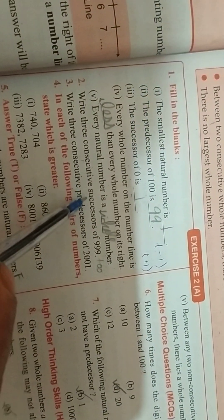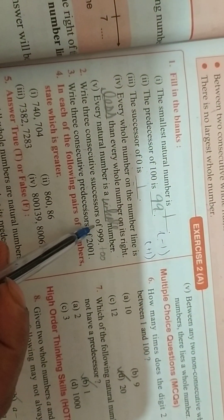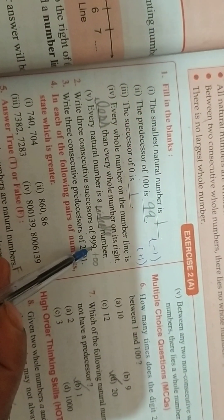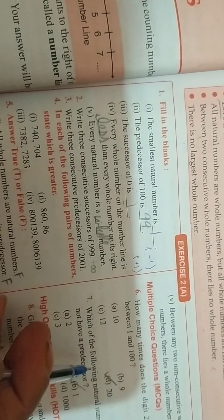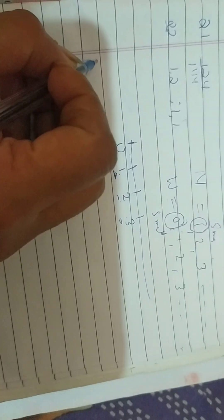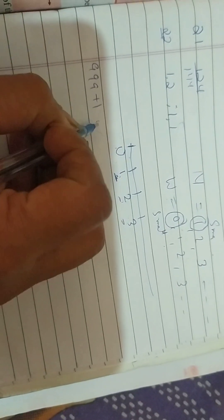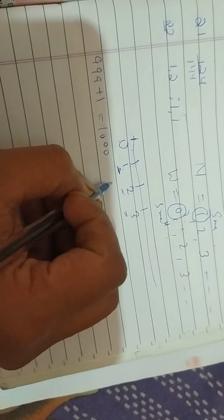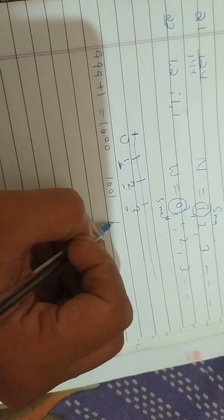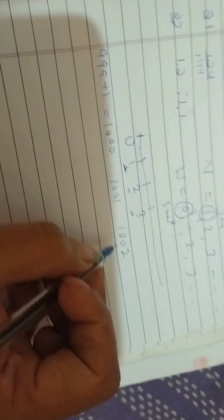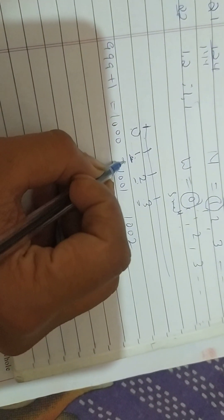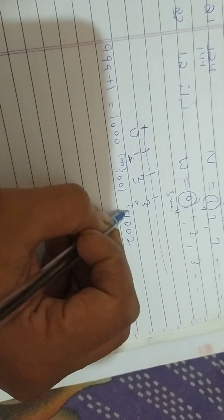Now, write 3 consecutive successors of 90,999. So what you will do? You will do plus 1, plus 1, plus 1. You will do plus 1 in this. It is 1000. Then next number 1001. And second is 1002. You will do in this also plus 1 and in this also plus 1.